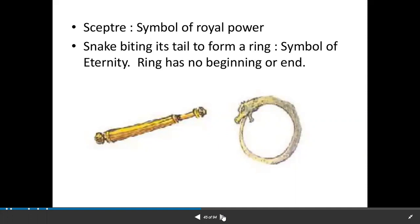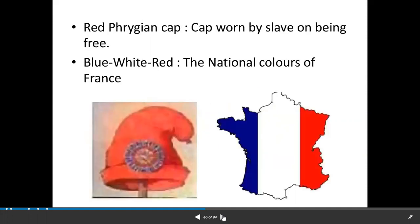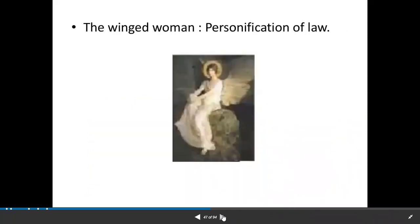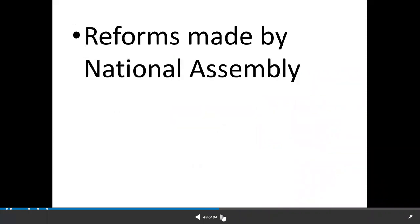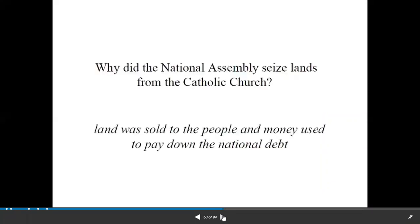The ring has no beginning or end. The red Phrygian cap — this is the symbol worn when a slave becomes free. Blue, white, red — that is the national palette of France. And the winged woman — that means personification of the law, the importance of the law. So these were the symbols used for illiterate people to unify them.